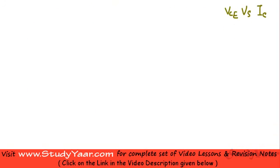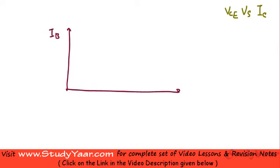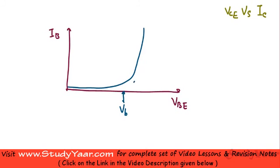So essentially your input characteristic of a transistor is the same as your forward bias voltage-to-current characteristic. Your input characteristic basically looks like this on a graph — this is your IB and this is your VBE. Your base current is going to vary like this: as soon as your VBE goes beyond your barrier potential, you have large current flowing through your PN junction.